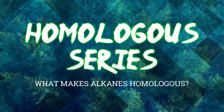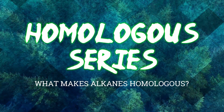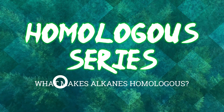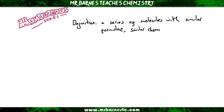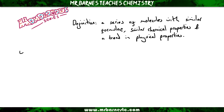Hi guys, welcome to this video looking at what a homologous series is. The best way to describe what a homologous series is, is to talk about the definition. A homologous series is a series of molecules with a similar formula, similar chemical properties, and a general trend in physical properties. I'm going to use alkanes as a key example of what a homologous series is.